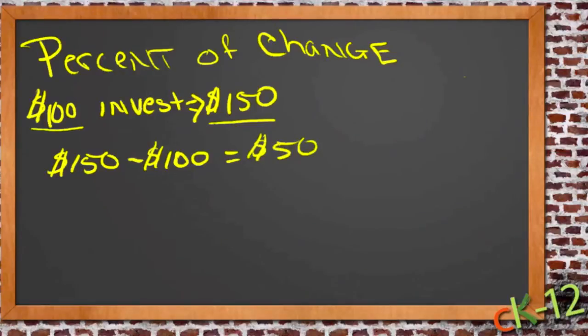So the difference between the two values divided by the starting value, so divided by the amount that we first put in. So we have $50, which is our profit, divided by the original amount that we put in, $100, which is a half, or .5, which is, as a percentage, 50%.